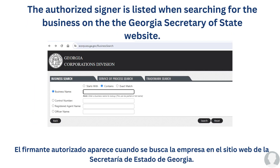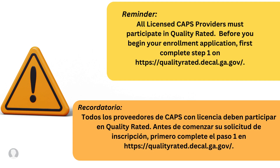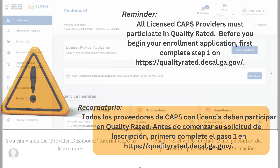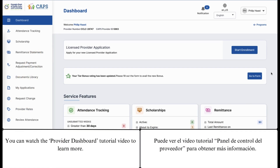The authorized signer is listed when searching for the business on the Georgia Secretary of State website. Remember, all licensed CAHPS providers must participate in Quality Rated. Before you begin your enrollment application, first complete step one on Quality Rated's website. You can watch the provider dashboard tutorial video to learn more.